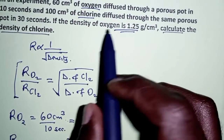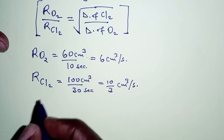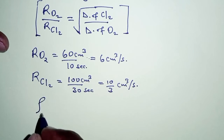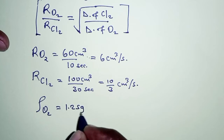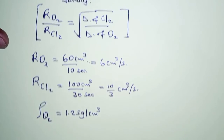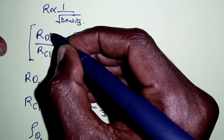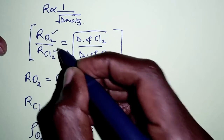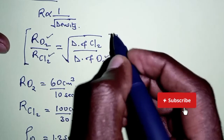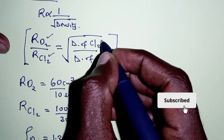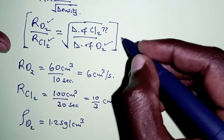We are also told that the density of oxygen is 1.25 grams per cubic centimeter. So in this formula we already have the rate of diffusion for oxygen, the rate of diffusion for chlorine, and the density of oxygen. What we are left to determine is the density of chlorine.